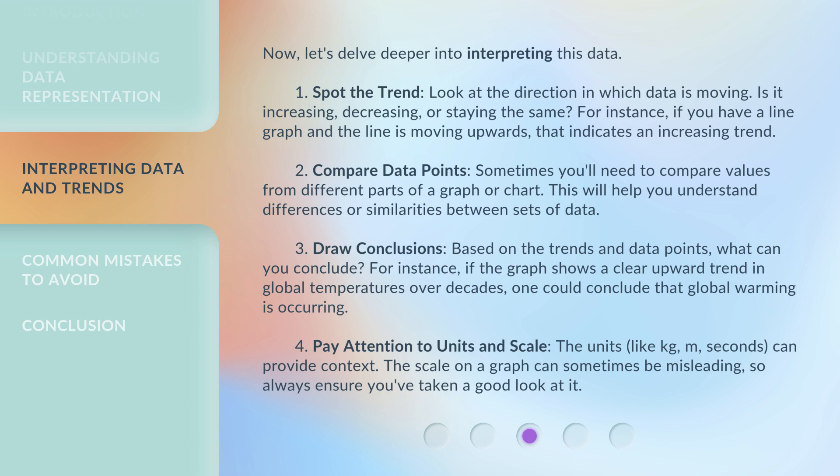Step 2: Compare data points. Sometimes you'll need to compare values from different parts of a graph or chart. This will help you understand differences or similarities between sets of data. Step 3: Draw conclusions. Based on the trends and data points, what can you conclude? For instance, if the graph shows a clear upward trend in global temperatures over decades, one could conclude that global warming is occurring.